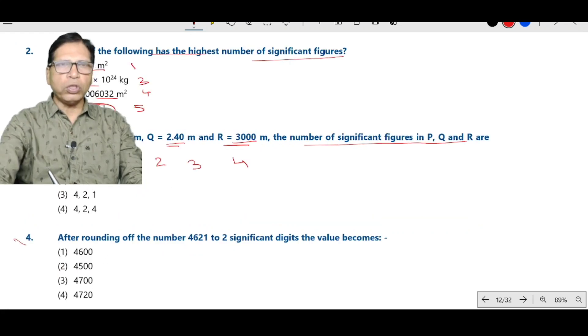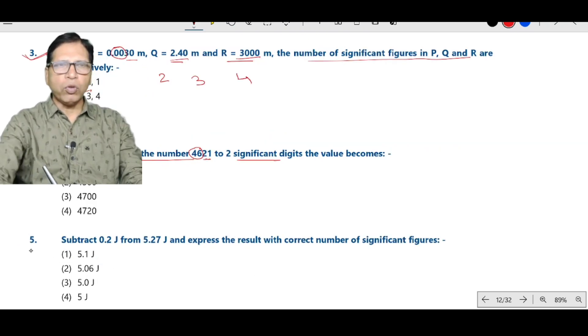Now question number 4. After rounding off the number 4621 to 2 significant figures. This is the 2 significant figures. After 2 significant figures, this is 21. So the actual is 4600.